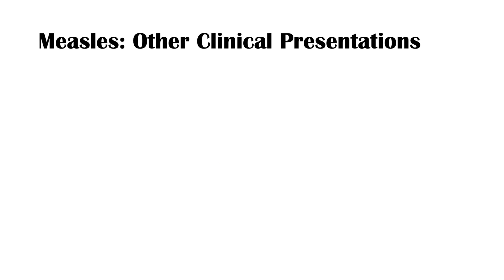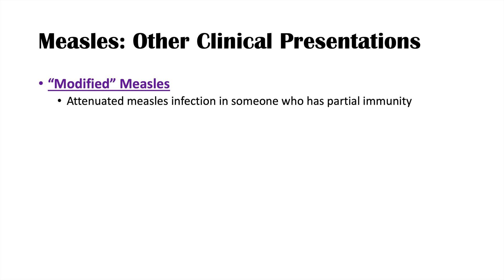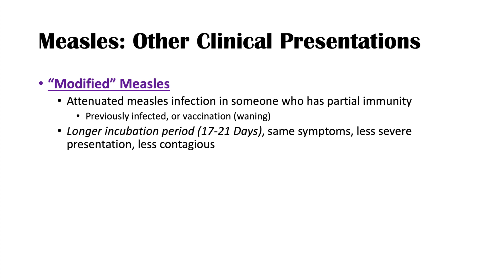There are two other clinical presentations of measles. The first is modified measles — an attenuated, or "diet" measles infection. It's a milder form that occurs in someone who has partial immunity from prior infection or waning vaccination. These individuals can still become infected, but the incubation period is longer — usually 17 to 21 days — the symptoms are less severe, and the individuals are less contagious.